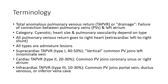All TAPVR drainage regions include: Supracardiac total anomalous pulmonary venous return, Type 1, accounting for 40 to 50%, where the vertical common pulmonary veins join the left innominate vein. Cardiac total anomalous pulmonary venous return, Type 2, accounting for 20 to 30%, where common pulmonary veins join the coronary sinus or right atrium.